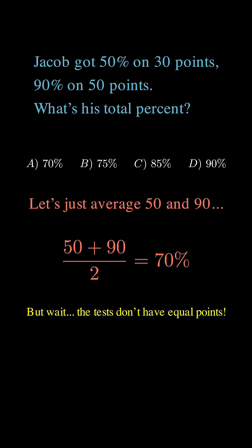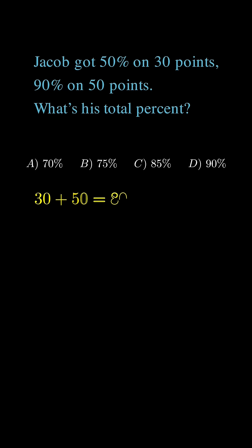On the first test, 50% of 30 is 15 points. On the second test, 90% of 50 is 45 points. Altogether,